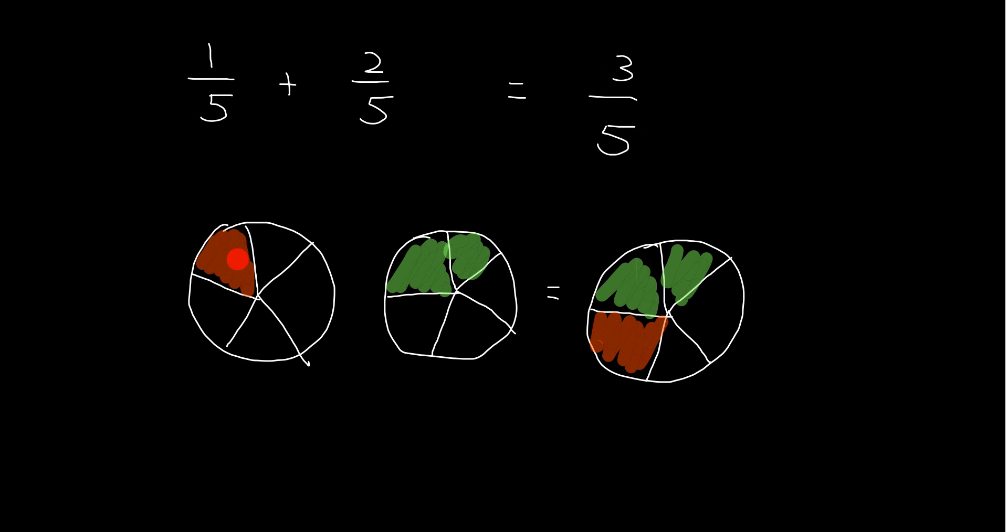And you can see I've drawn 1 fifth here because that's one out of the five little sectors. And 2 fifths here because that's two out of the five little sectors. And when I add them together I get 1, 2 and 3 fifths when I combine them because it's three out of the five little sectors. So the important thing to do when I'm adding fractions is notice I'm adding the 1 plus the 2 which gives me the 3. But I've still got 5 on the bottom. I'm not saying 3 over 10.